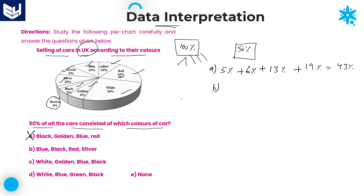Go for option B: blue, black, red, and silver. Blue is 13%, black is 5%, red is 19%, silver is 10%. Adding: 19 + 10 = 29, 29 + 5 = 34, 34 + 13 = 47%. We are not getting 50%, so option B is not the answer.